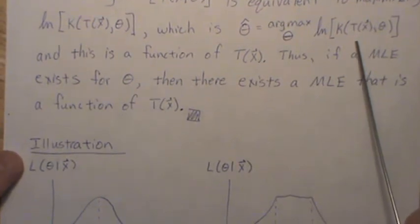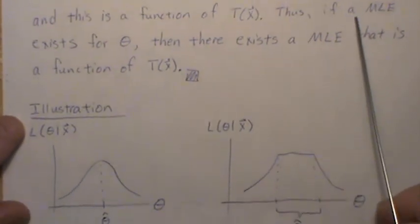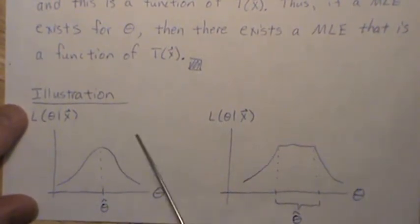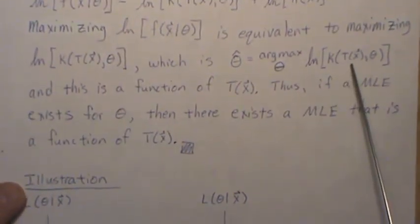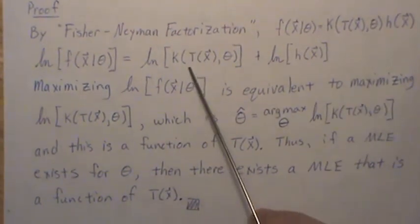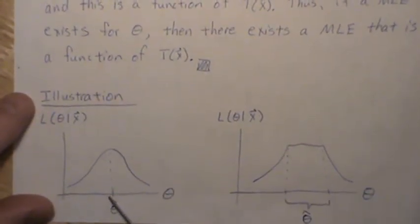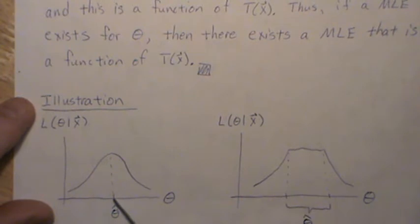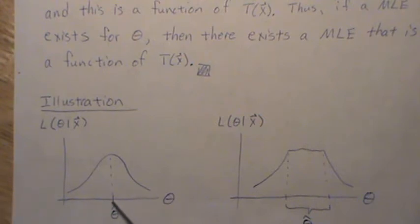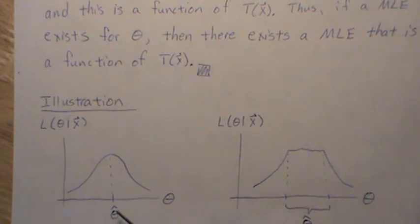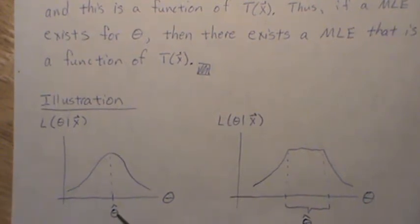Now let's use a second sufficient statistic T2 — the MLE value will be the same number. Using a third sufficient statistic T3, partitioning differently, still gives the same MLE value. We can create functions of different sufficient statistics that all equal the same maximum likelihood value. This is an argument for Theorem 4: if the MLE is unique, it's a function of every sufficient statistic, which means it's minimal.